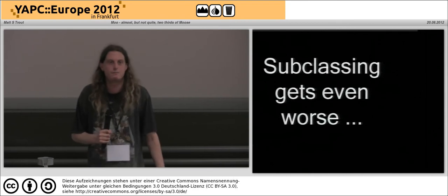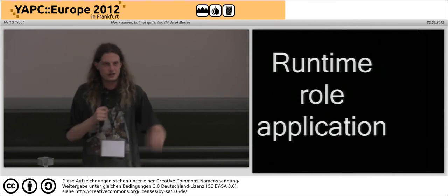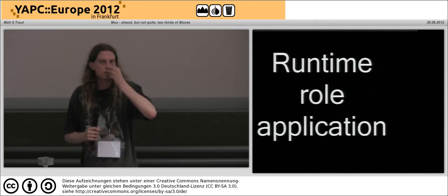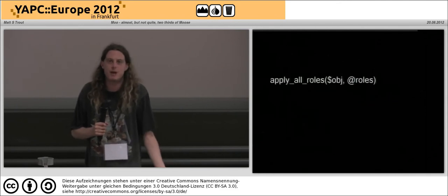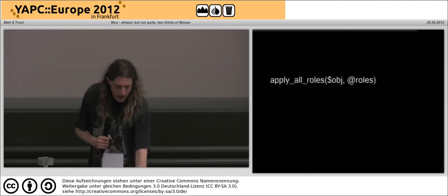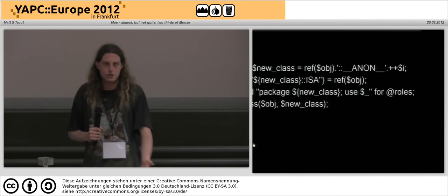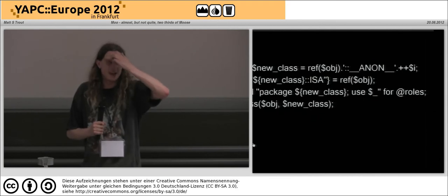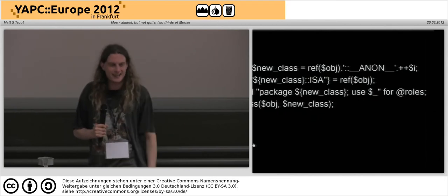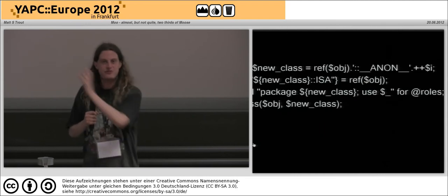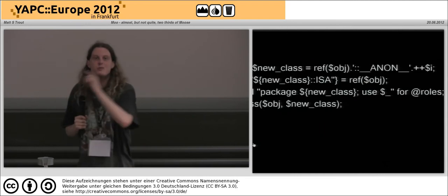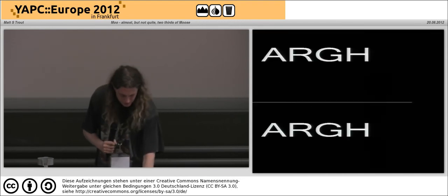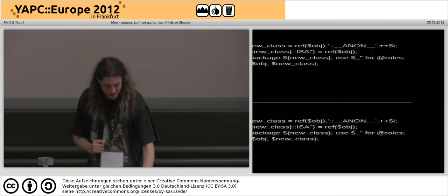Let's not even try to show the example for subclassing, because the code will be that big and still won't fit on one slide. Runtime role application is something I use heavily for plugin systems. In a Moose-like system you just call a function and it's done. Do it yourself? It's time to turn off strict refs, then generate a class name, fiddle with its symbol table, do some horrible things involving string eval. No. I do not want to be writing this code.